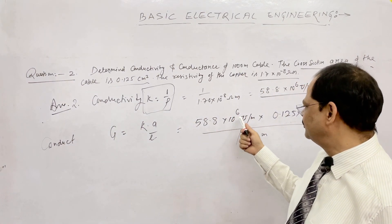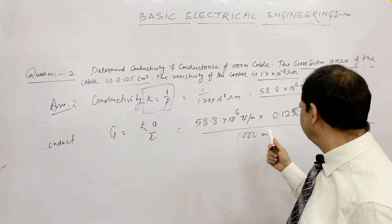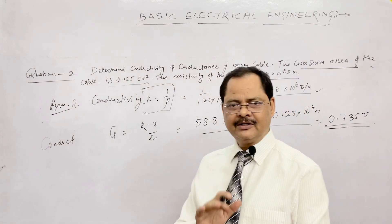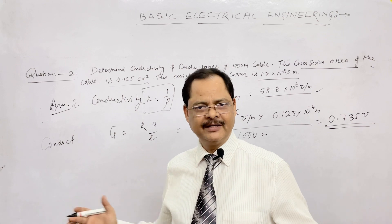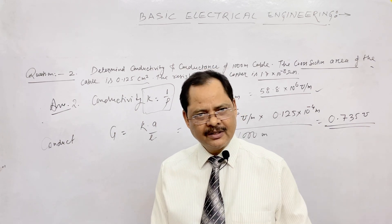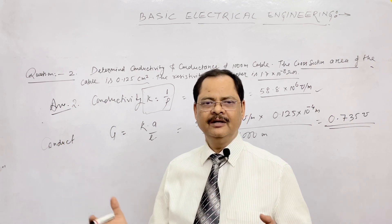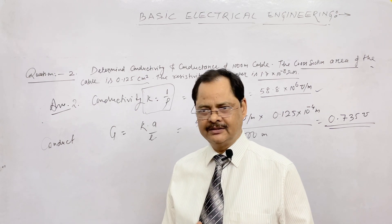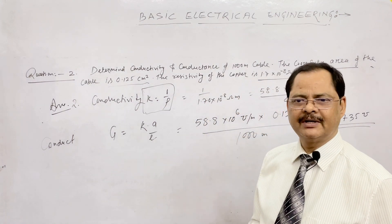To summarize the second question: conductivity k = 58.8 × 10⁶ mho/m, multiplied by cross-section area upon length gives conductance. As length increases, resistance increases but conductance decreases — they are reciprocal. As cross-section area increases, resistance decreases and conductance increases.